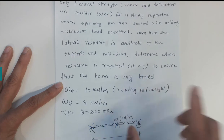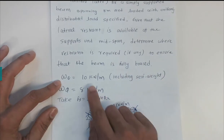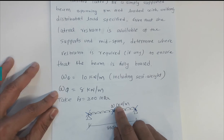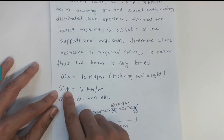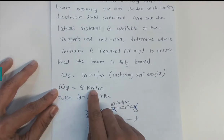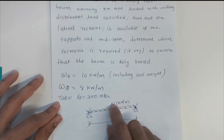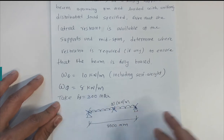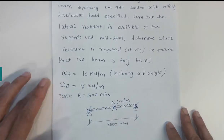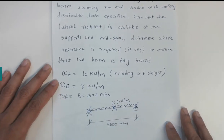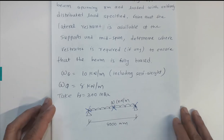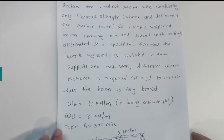The dead load is given as 10 kilo-Newtons per meter, and the live load is given as 8 kilo-Newtons per meter. The yield strength Fy is 300 megapascals.